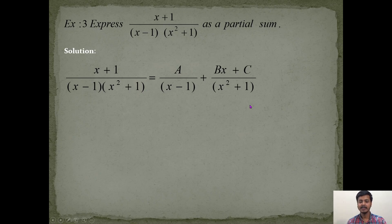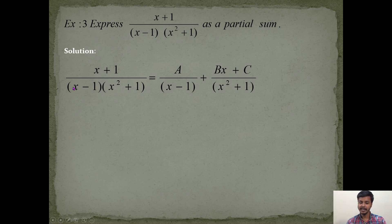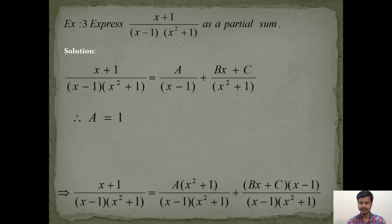We express it as A/(x − 1) + (Bx + C)/(x² + 1). Can we apply the cover-up method here? Yes — because we have two different factors in the denominator. To find A, put x = 1 covering the factor (x − 1): (1 + 1)/(1² + 1) = 2/2 = 1. So A = 1. For B and C, the cover-up method is no longer applicable, so we take the LCM and equate coefficients.